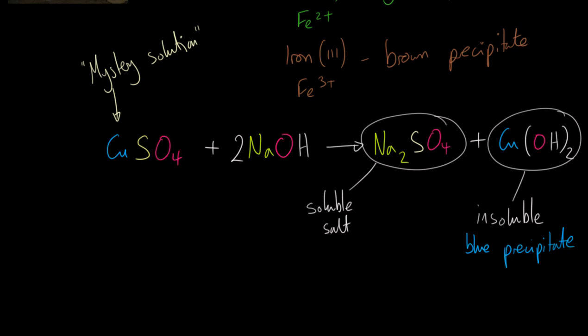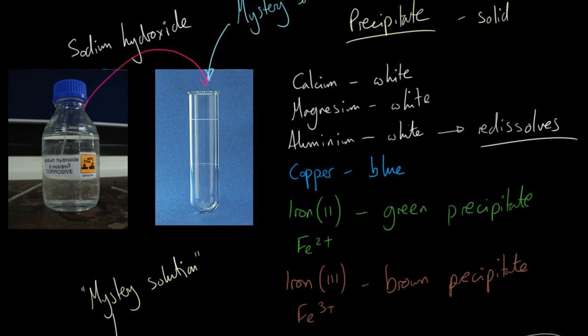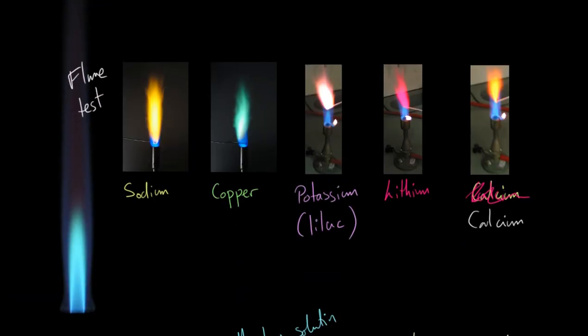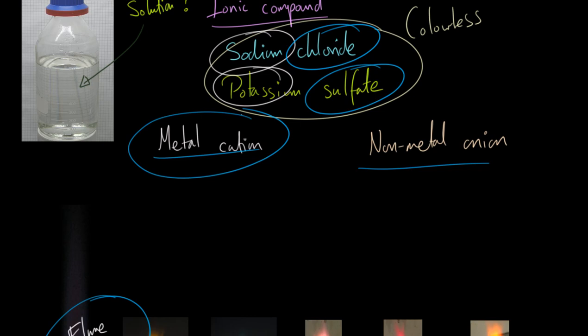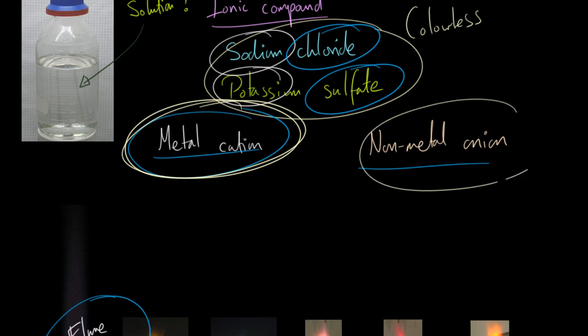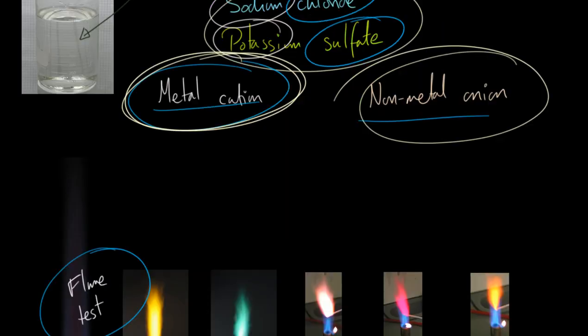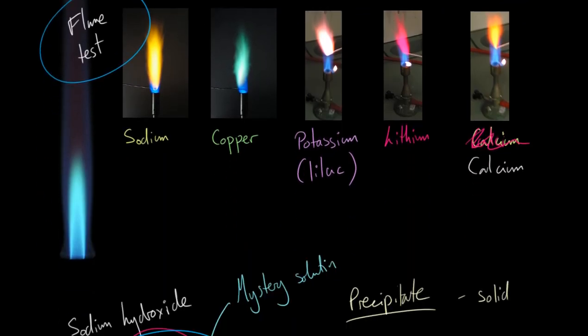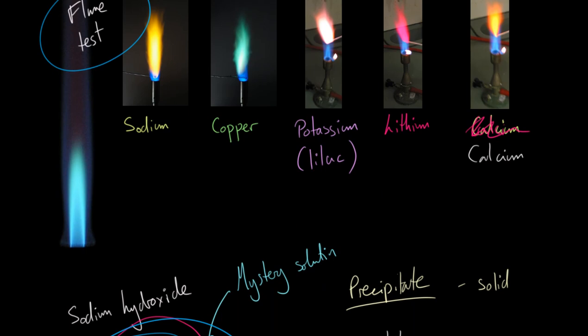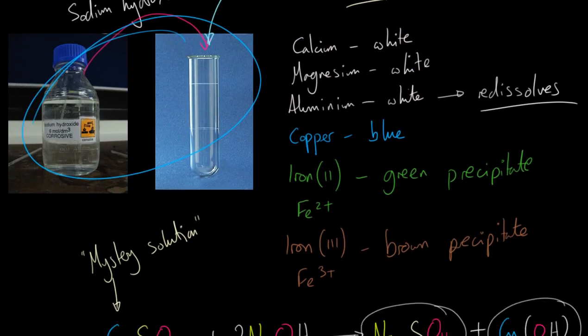So a combination of the sodium hydroxide test and the flame test should reveal what metal cation is in your mystery solution. But what about the non-metal part? Let's say you've worked out it's copper - copper sulfate, sulfate, carbonate, or chloride? That's where you need a separate battery of tests.